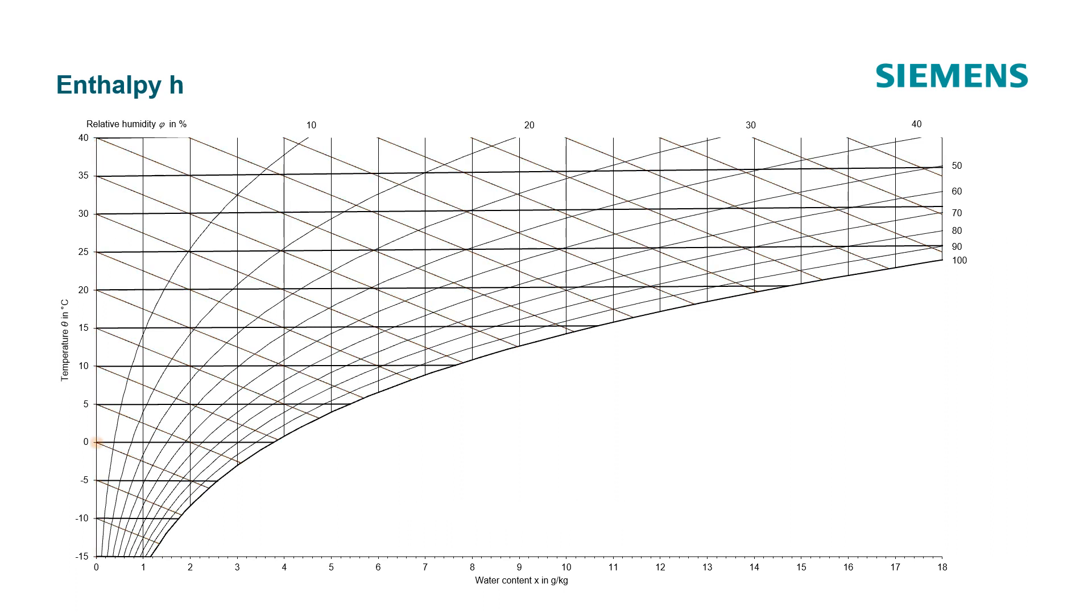The defined zero point of the enthalpy scale is at a temperature of 0 degrees Celsius and at a theoretical water content of 0 grams water per kilogram air. The enthalpy scale is often also plotted along the saturation line.